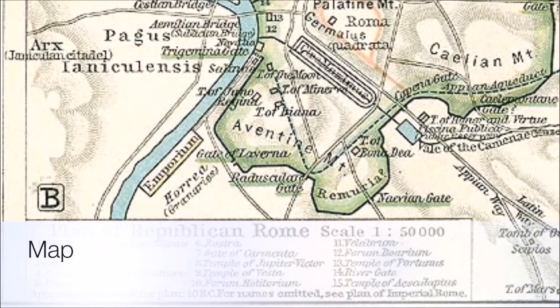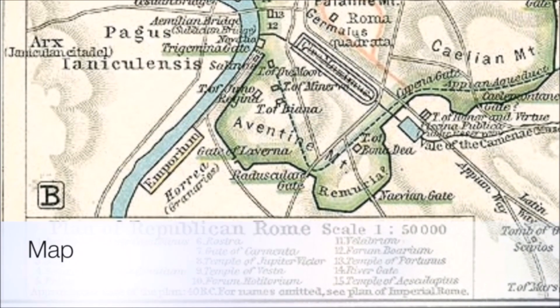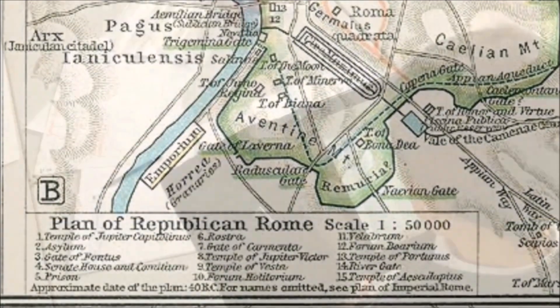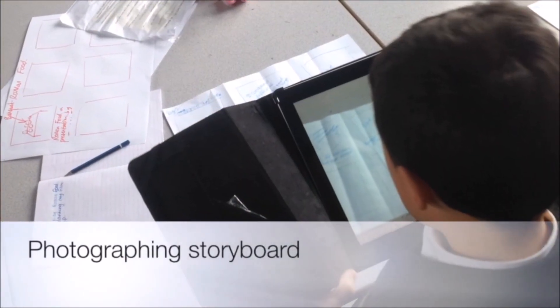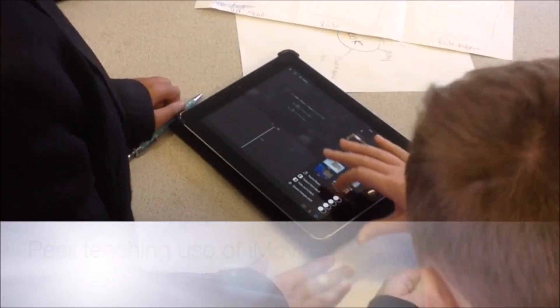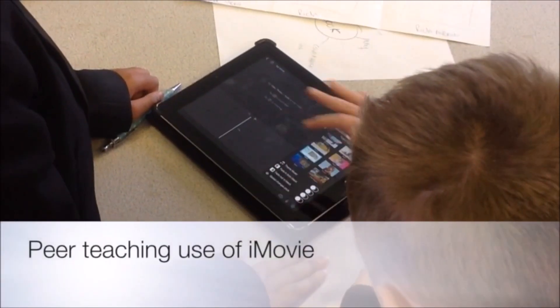In the map phase I chose to map out the project with the pupils using mind maps and storyboards. However, we did this on paper as I found in the past that using the iPads sometimes slowed this process down.